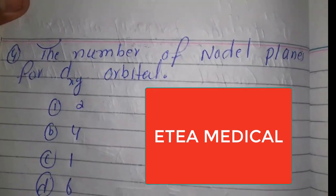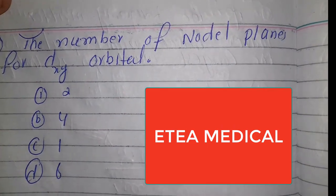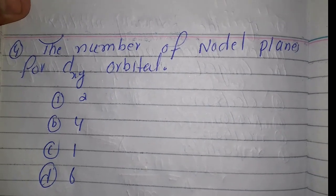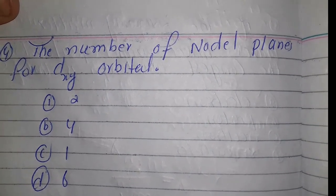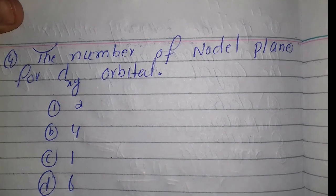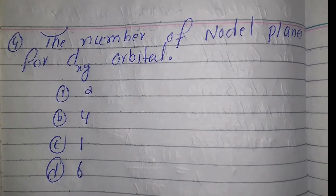Assalamu alaikum. Today's MCQ is on the same topic, atomic spectra. The question is: the number of nodal planes for the d_xy orbital is (a) 2, (b) 4, (c) 1, or (d) 6. So we first define nodal planes.